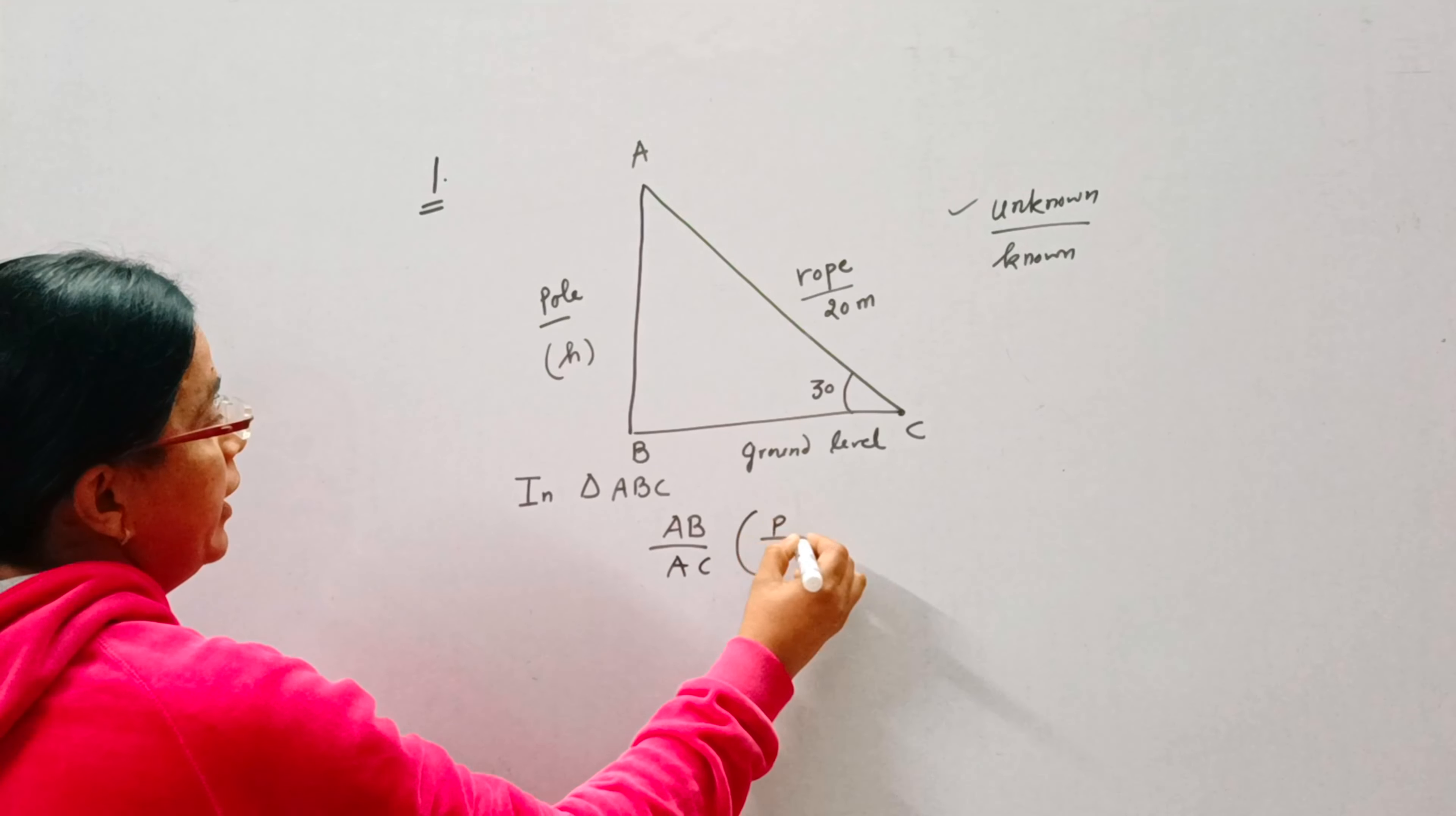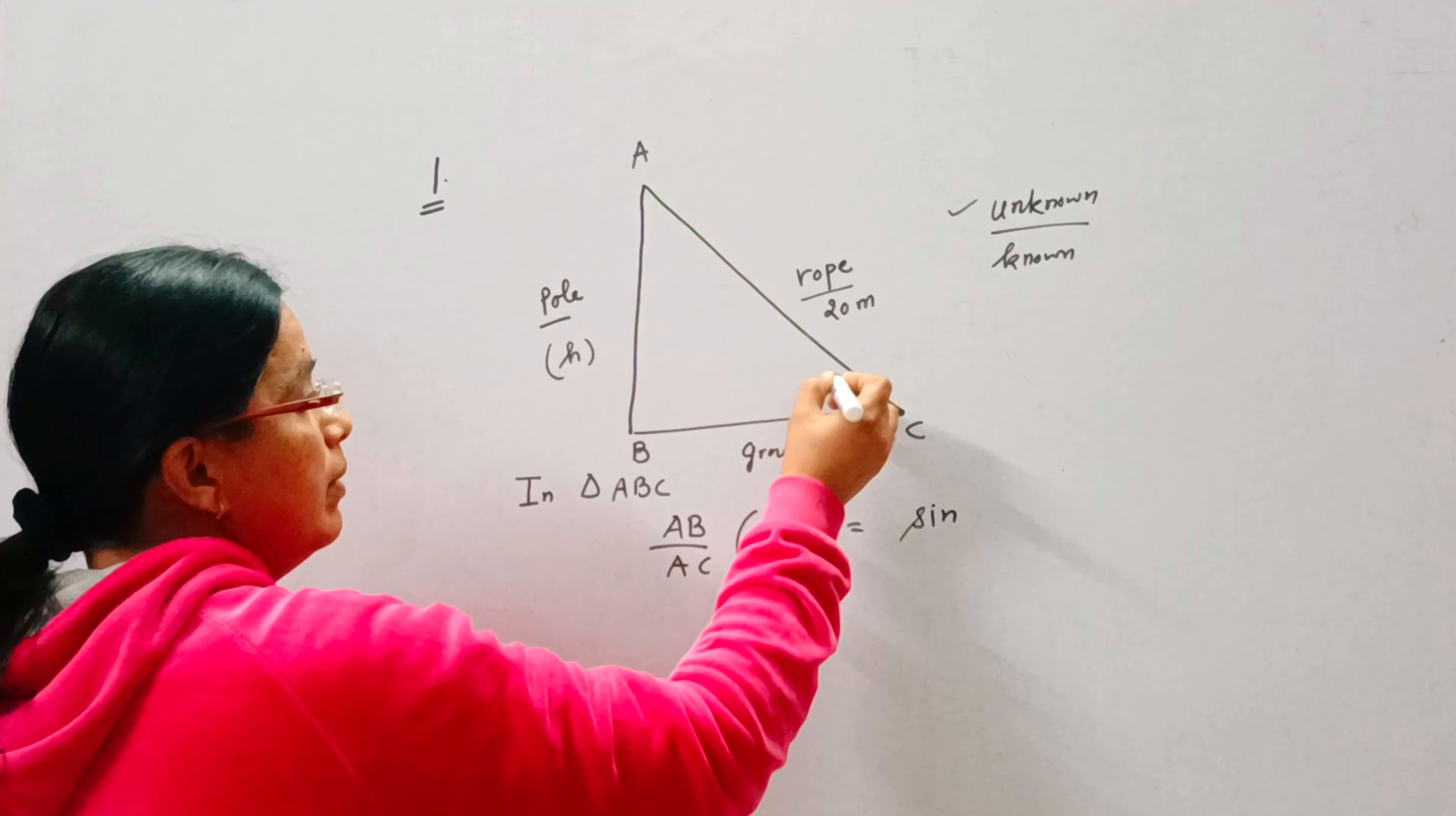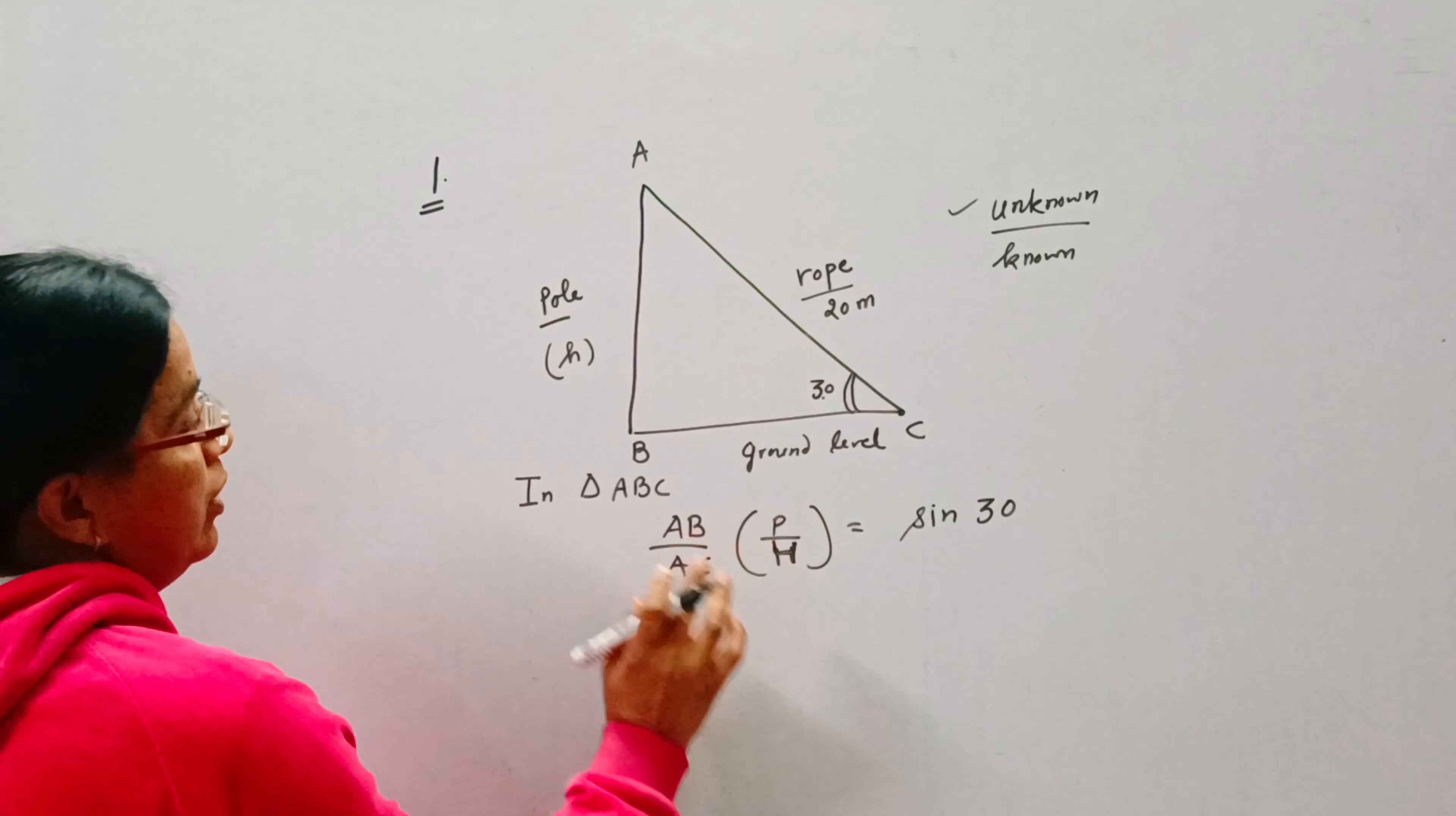Now, AB is perpendicular and AC is hypotenuse. So it becomes the ratio P by H, and we know P by H is sine theta. Theta means the angle. Now this angle is 30, so AB upon AC is equal to sine 30. Unknown by known, P by H.